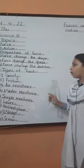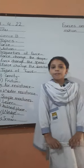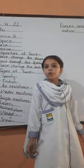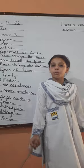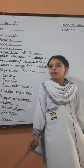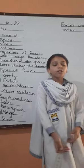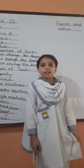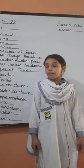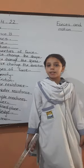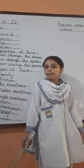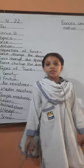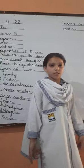Types of force. Gravity. Gravity is a force that attracts a body towards the center of the earth. For example, I jump in the air and gravity makes sure I come back down to earth. It is due to gravity.